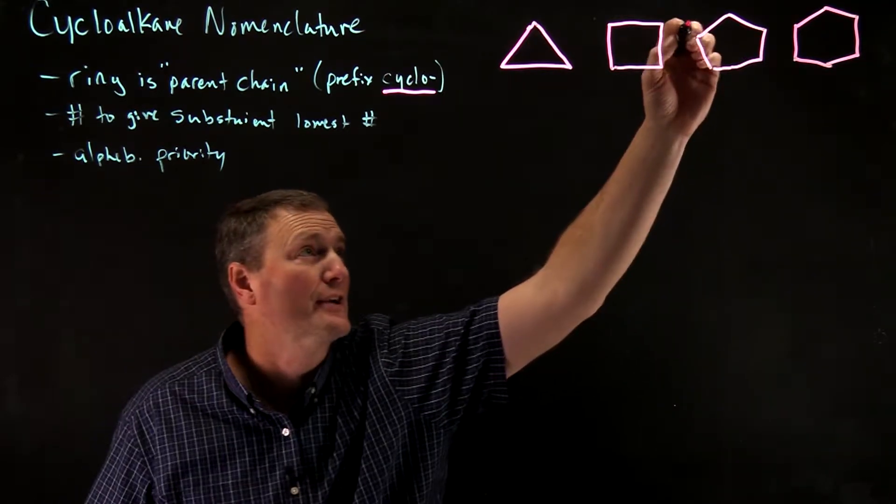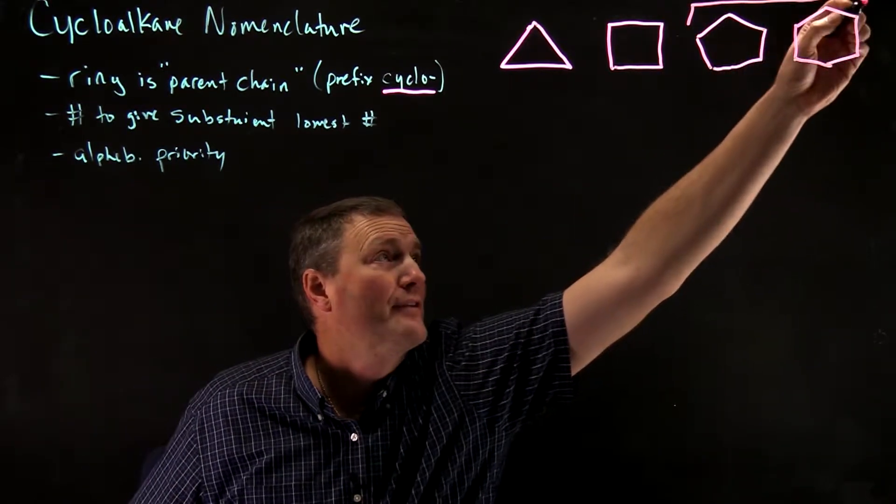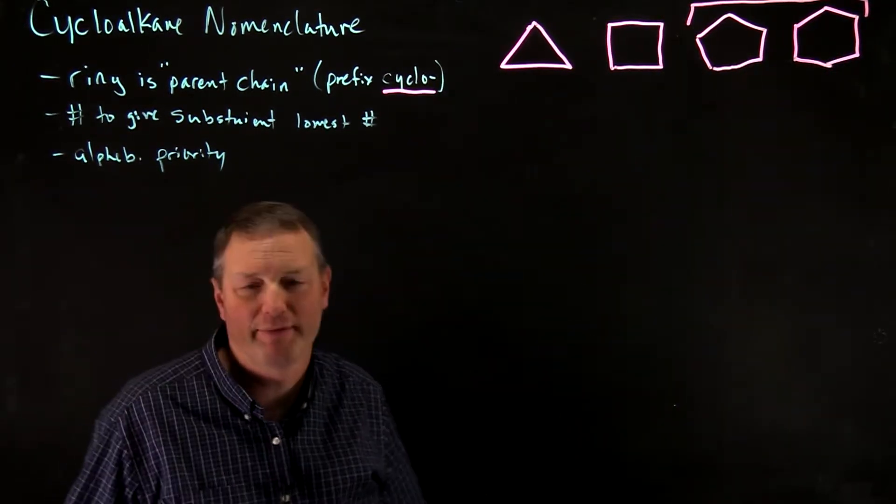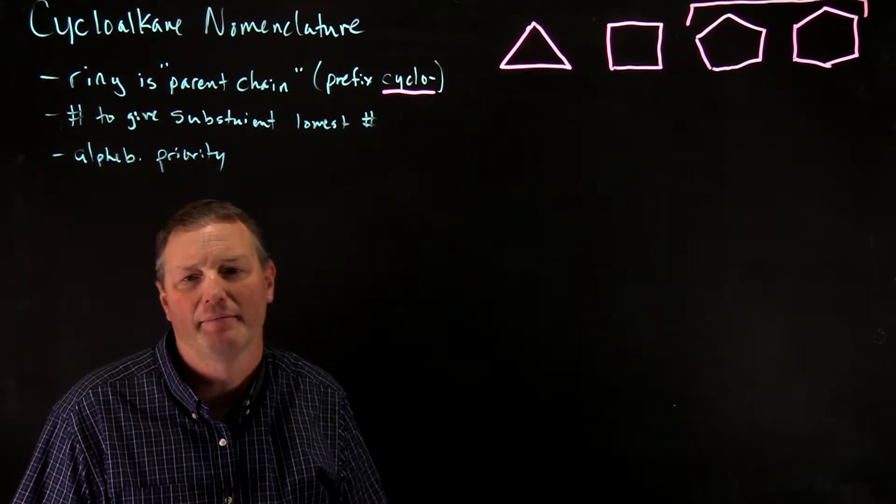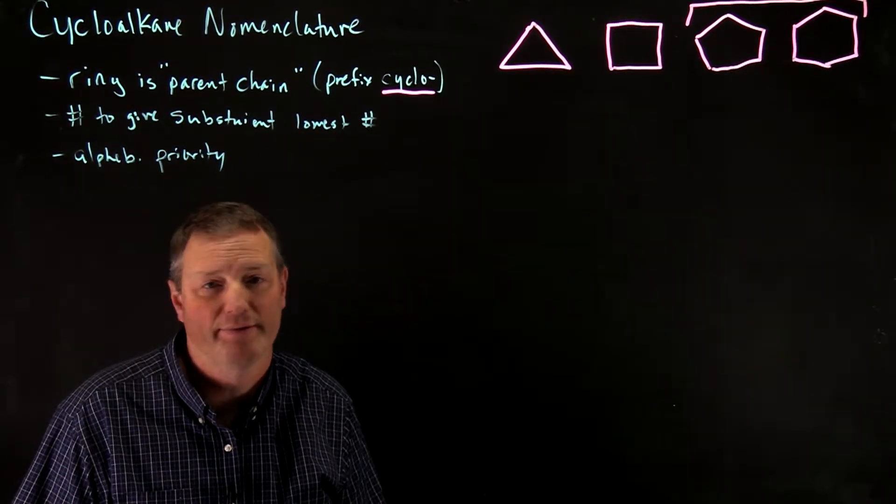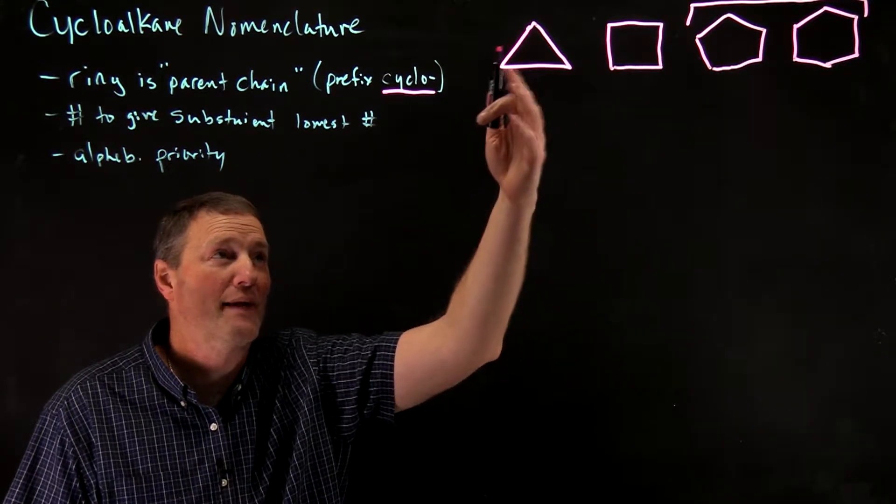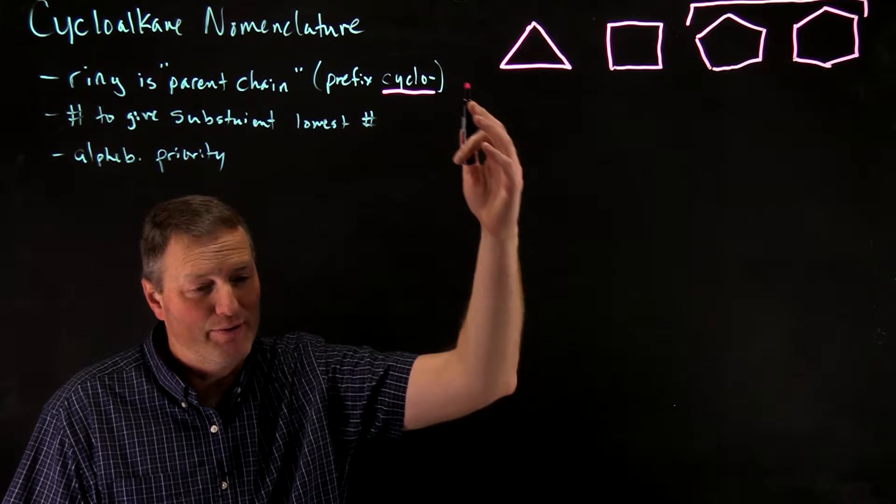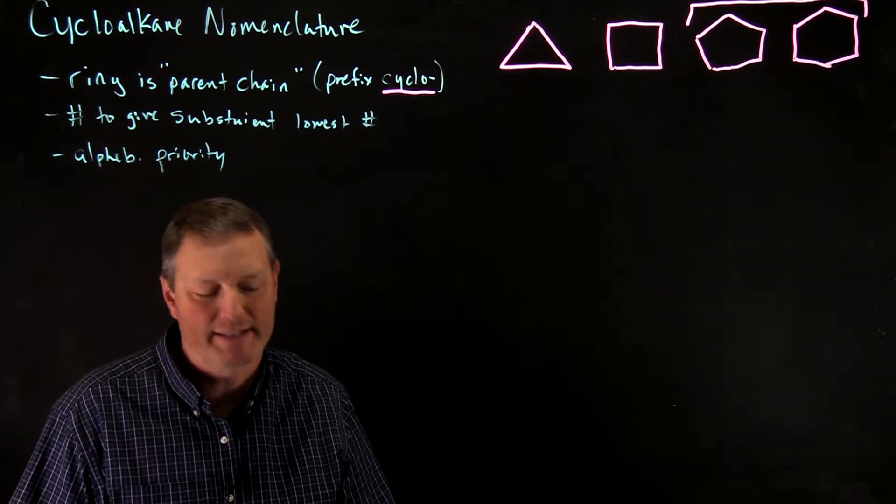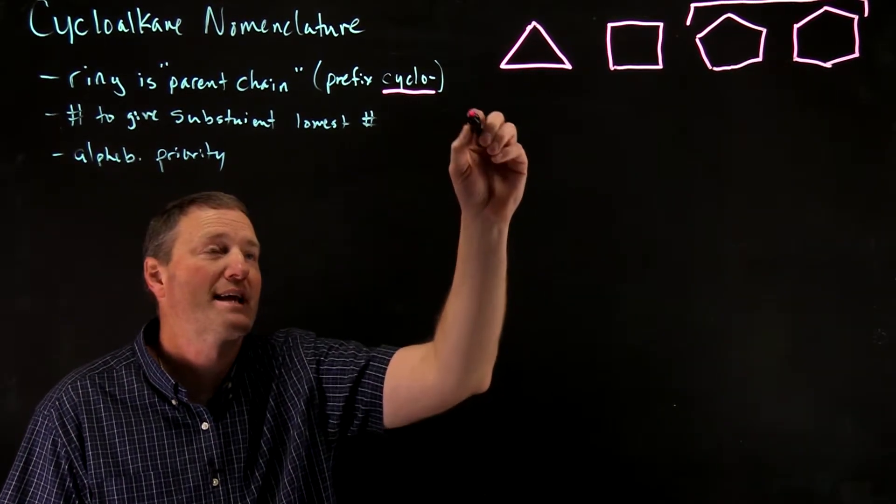These two in particular are the most common because they're quite stable. You find those in a lot of natural products and drug compounds. So how would you look at these? This three-membered ring obviously has three carbons, so you'd use the prefix prop, but this is going to be cyclopropane.